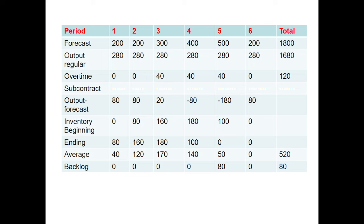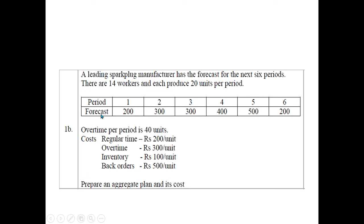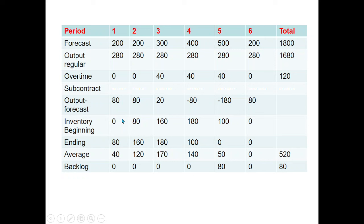I have prepared a table with all the data and calculations for the aggregate plan. In the first row are the six periods, numbered one through six. In the second row are the forecasted spark plug demand values as given in the problem: period 1: 200, period 2: 200, period 3: 300, and so on. The total forecasted demand across all six periods is 1,800 spark plugs.